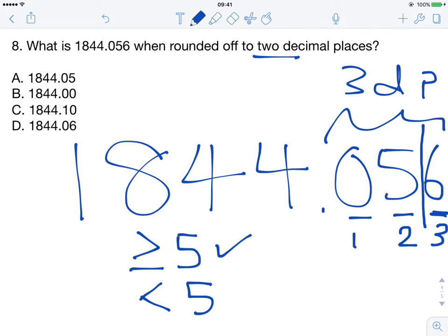If 6 was less than 5, then we would not have to change this number here, the 5, we just keep it as it is.